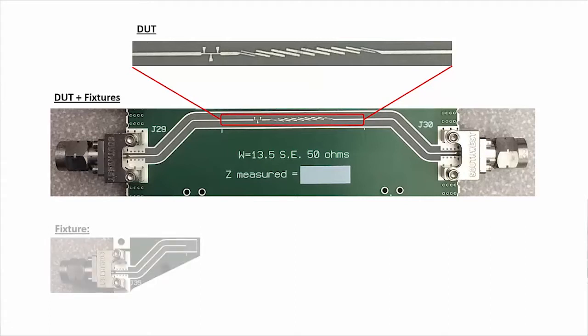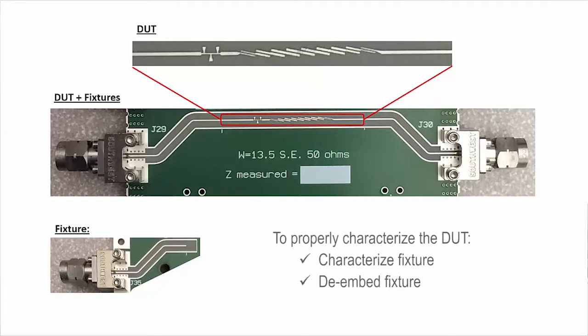Also on the validation board, I've built a replica of the fixture with connectors. To properly characterize the DUT, I will need to characterize the fixture and then de-embed the fixture at each port of the DUT from the combined measurement of the DUT plus fixtures.